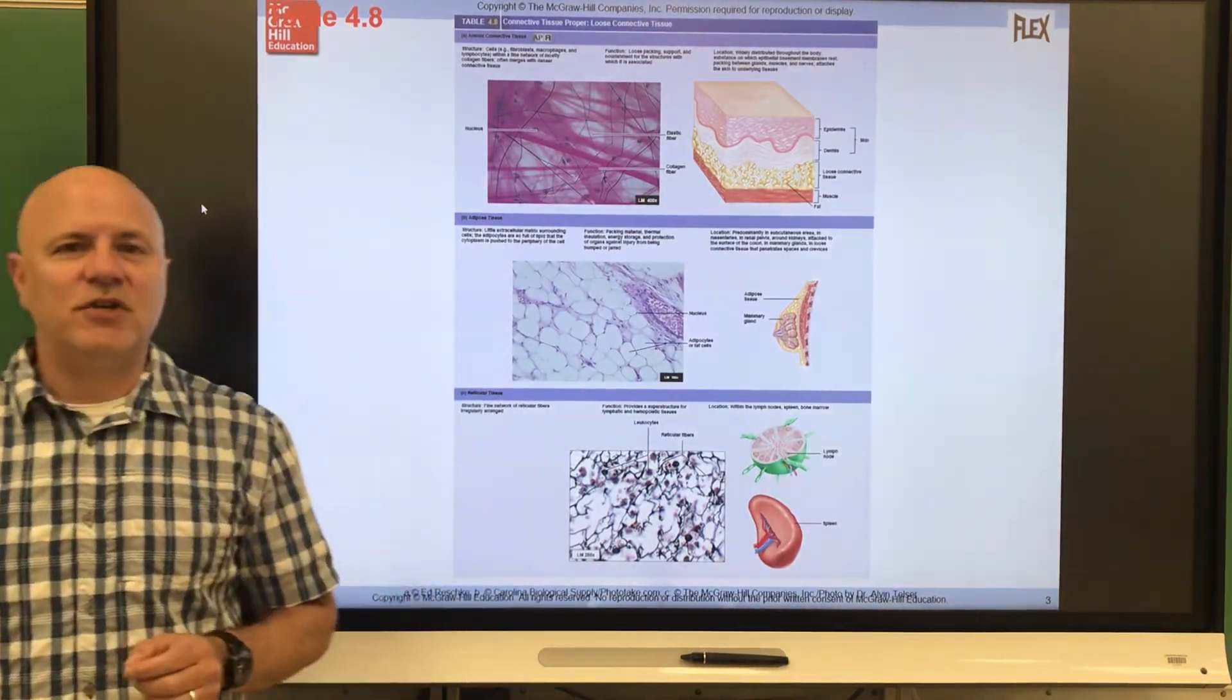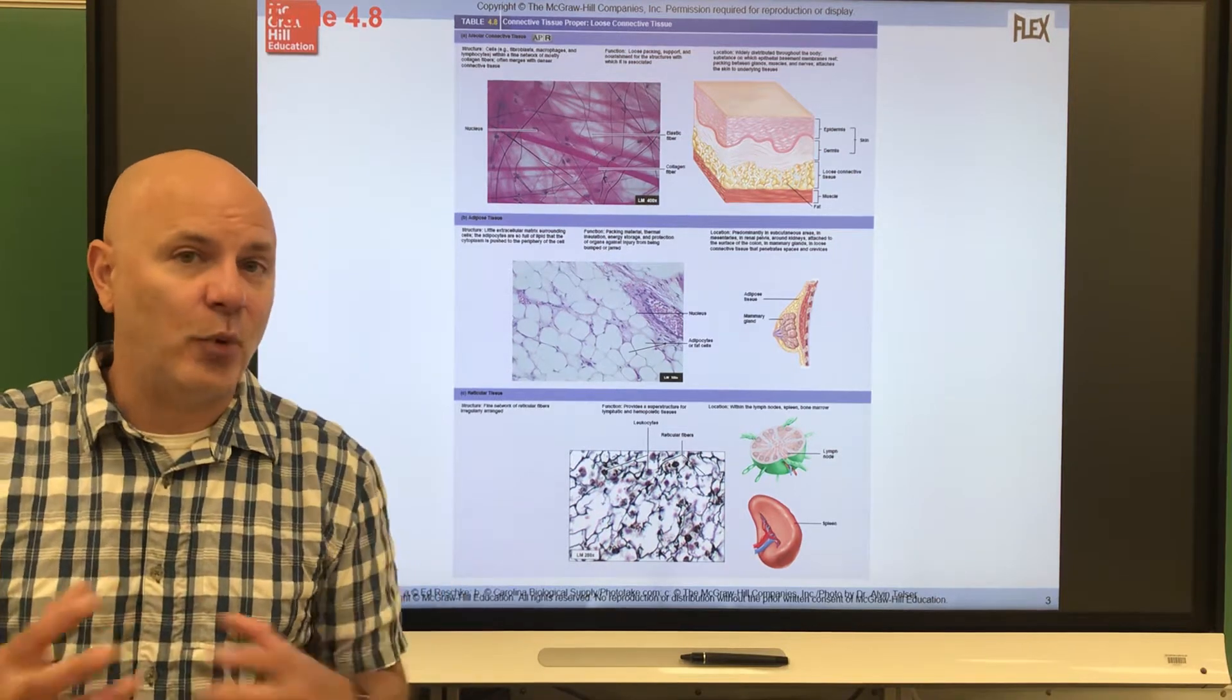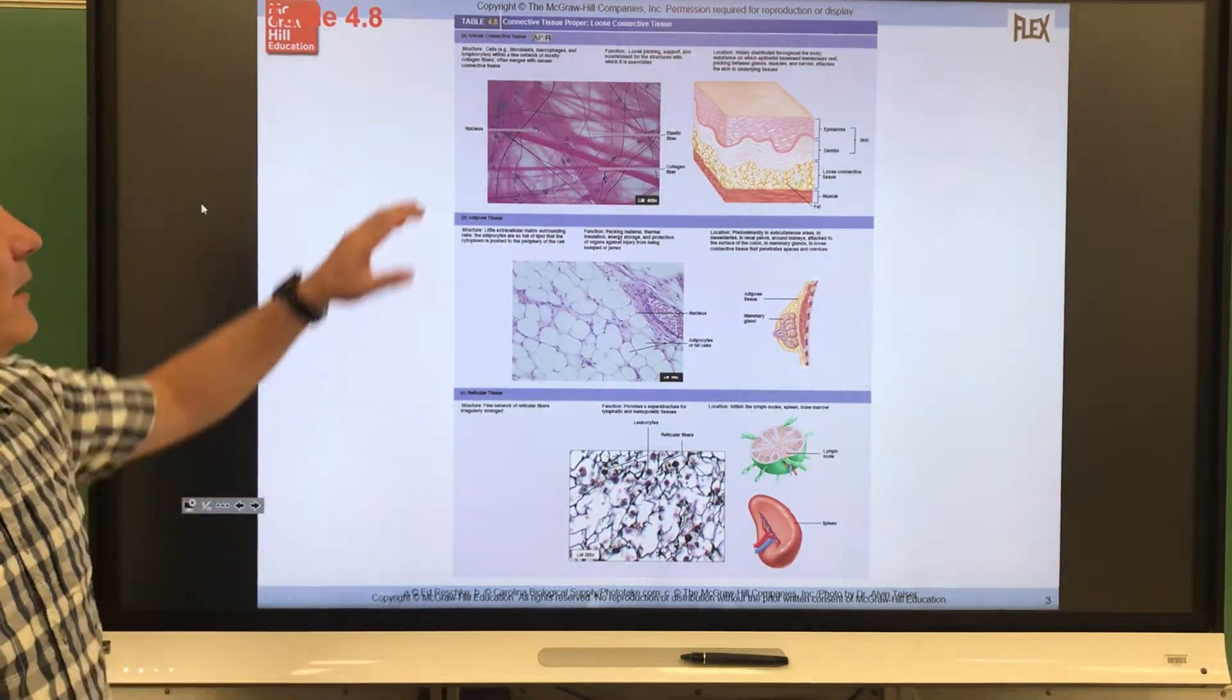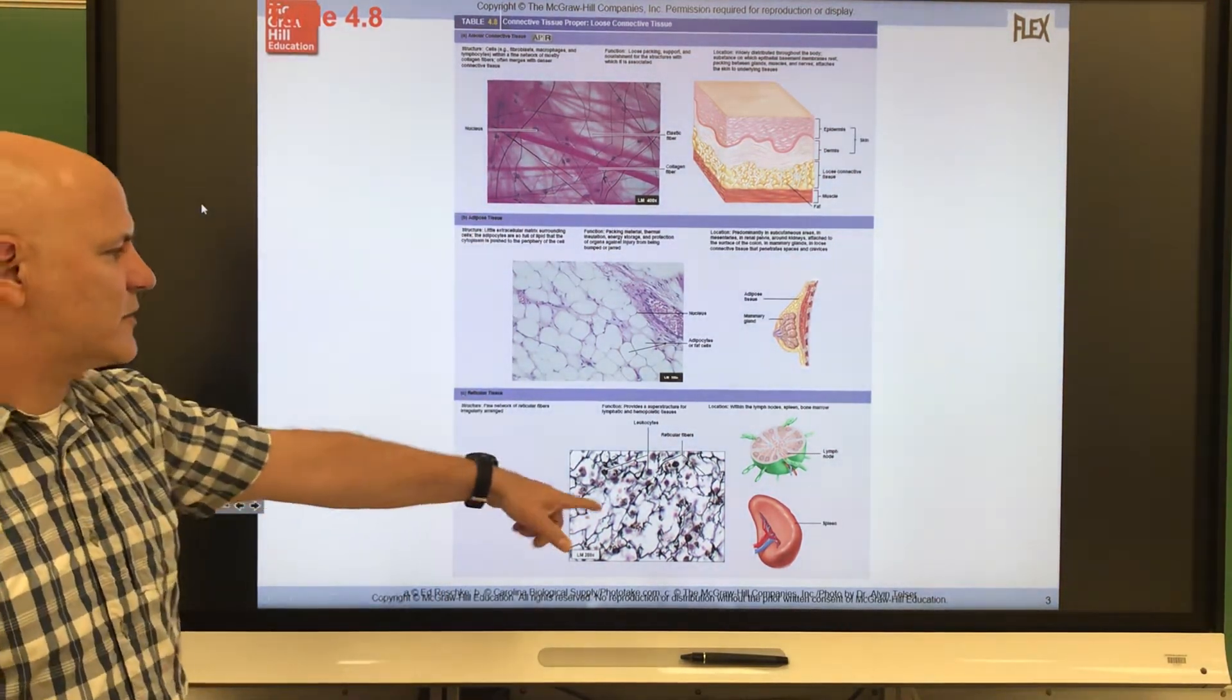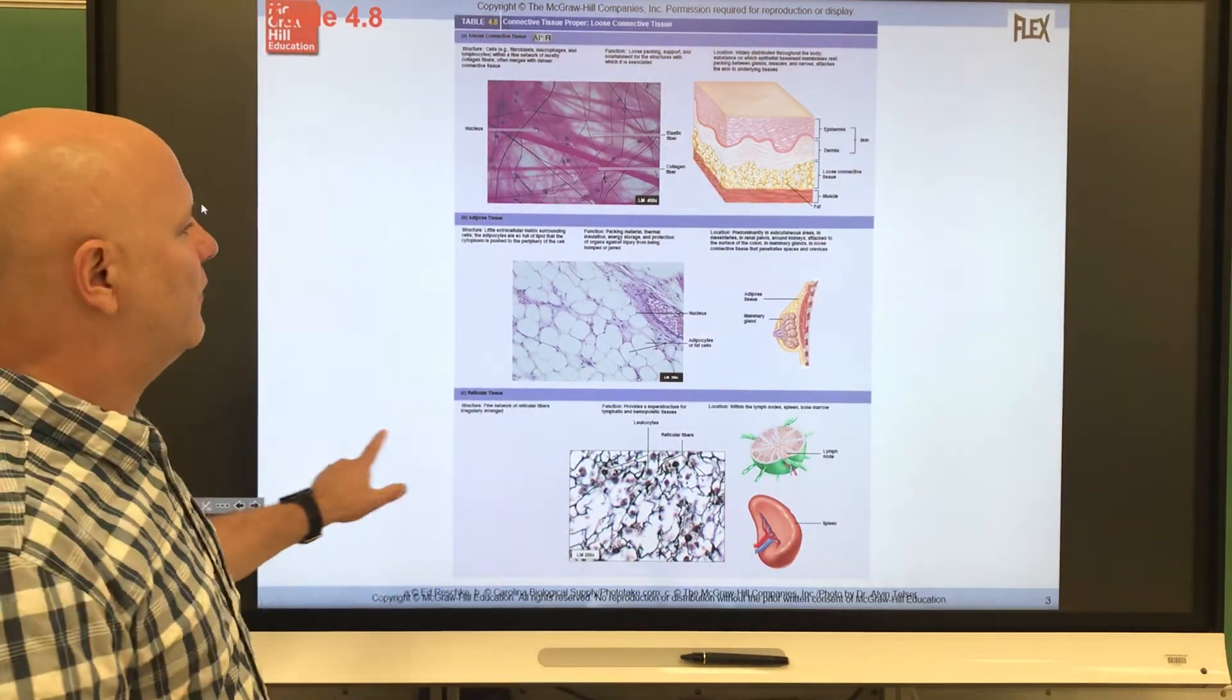Next is connective tissue. Now the main thing that connective tissue does is it supports the other tissue types. So, you know, areolar, adipose, this is called reticular, not one you need to know for the lab portion.